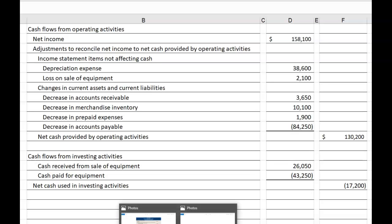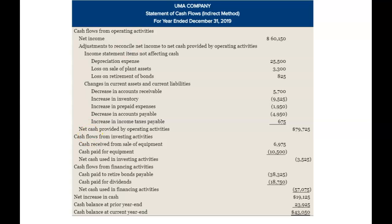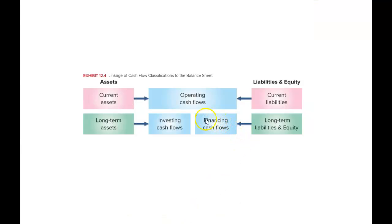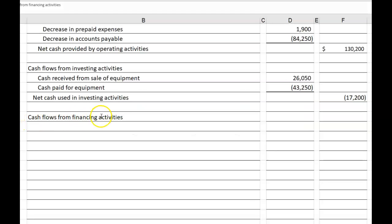Next section. By looking at our UMA Company example, now we want to do cash flows from financing activities. Looking at Exhibit 12.4, when we're building our financing section of the cash flow statement, we want to take a look at changes in long-term liabilities and in equity, and report those changes that arose because of a receipt of cash or a payment of cash.